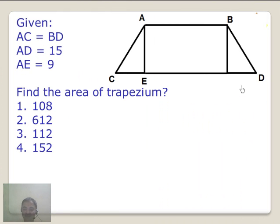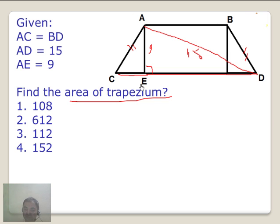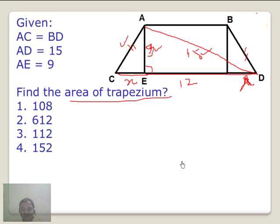Let's move to another CAT question. This is not a typical question — it is a very very difficult question. I know AC is equal to BD, AD is 15, and the height is 9. Now using Pythagoras triplet 3-4-5: this is 9, this is 15, so this has to be 12. If this is X, I make one equation in terms of X and 12, and another using X and 9, to find the missing value. That's how you solve it by the traditional method.